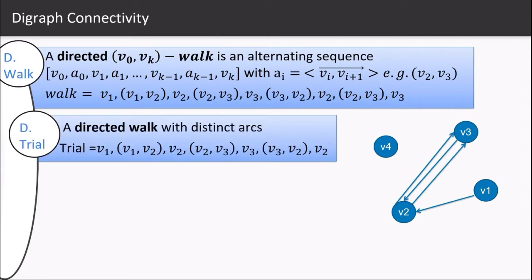A directed trail is a directed walk with distinct arcs. In here, we have v2 and v3 counted twice in the walk, so we will remove one of this arc and end up in a directed trail.